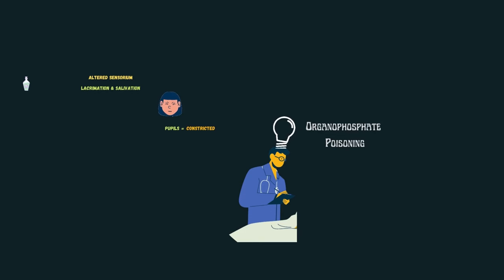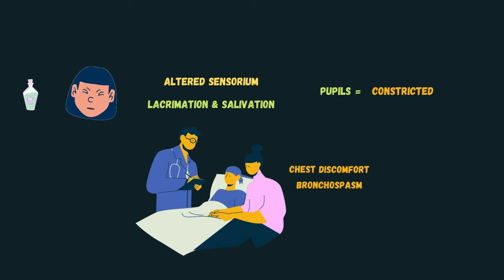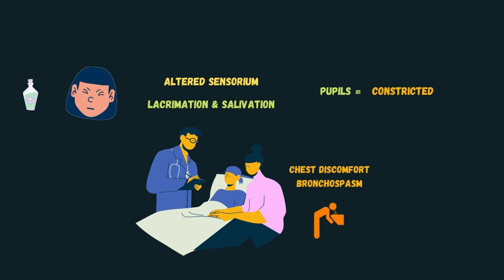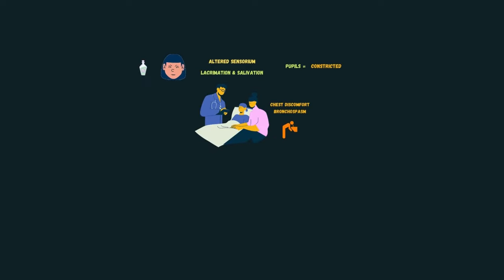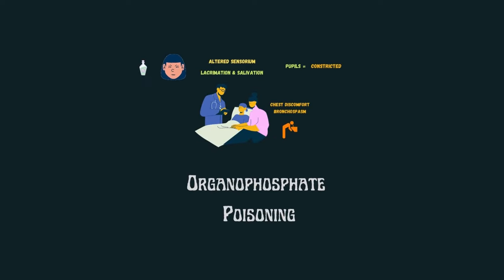Organophosphate poisoning is a medical emergency and diagnosis is strictly clinical. The patient is complaining of tightness of the chest and on auscultation you found wheezing sounds. When you took history, you found out that he had continuous vomiting, loose motions, urination, and GI distress in particular. This is a classic presentation of organophosphate poisoning.